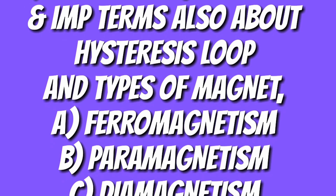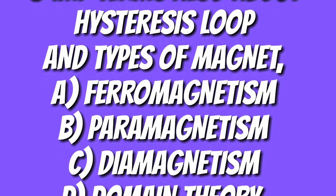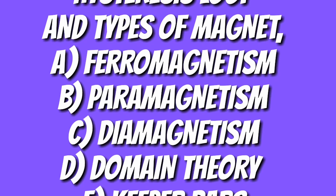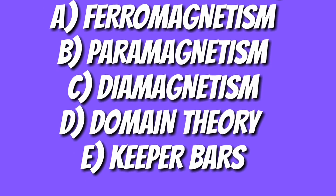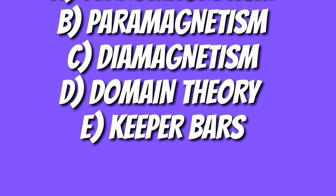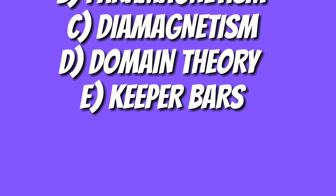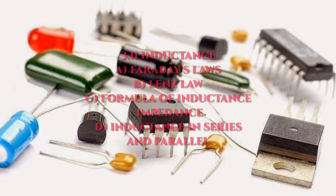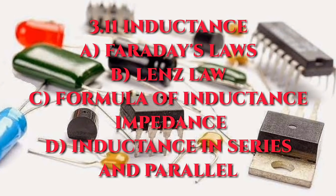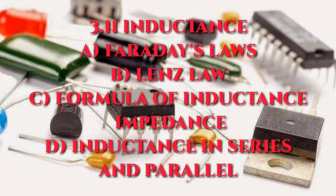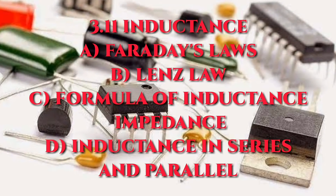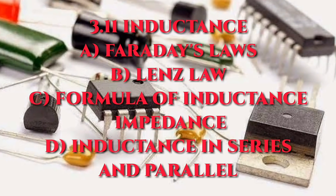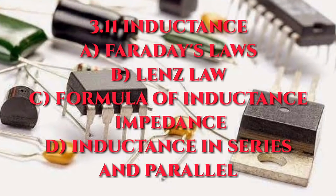About magnetism, we have materials of magnets and terms such as permeability, permanence, field intensity and also hysteresis loop. The most important is the types of magnets: ferromagnetism, paramagnetism and diamagnetism. Also study the domain theory and molecule alignment. Remember that keeper bars are used to store magnets. Now we have inductance — remember Faraday's laws, Lenz's law, formula of inductance and impedance. Inductance when connected in series and parallel is also important.